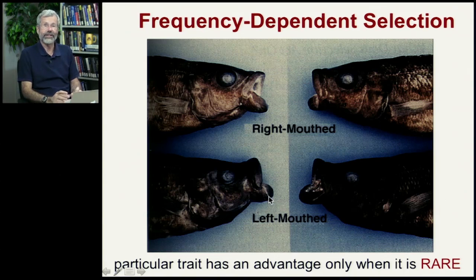In the same population there are also left-mouthed fish whose mouth goes off to the left, so they swim to the right of the big fish and take a chunk. This persists because if a big fish keeps getting bitten on the right side, it becomes ready for attacks from that direction. But if somebody bites it from the unexpected left-hand side, it takes a moment to react and the attacker can escape. This is where a trait has an advantage as long as it's rare — if you're the only one biting from the left, the fish isn't prepared.